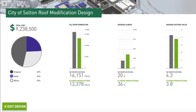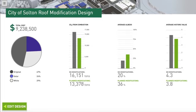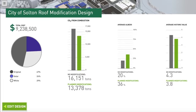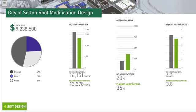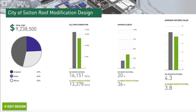Here, at the top, you can see the total cost of your design. Below it, the pie chart shows you what percentage of the building areas are original, solar, or white. The three bar graphs compare your new design with the original values for CO2 from combustion, average albedo, and the average historic value.